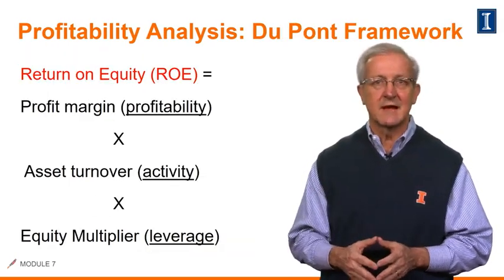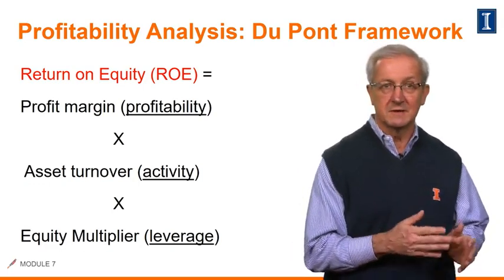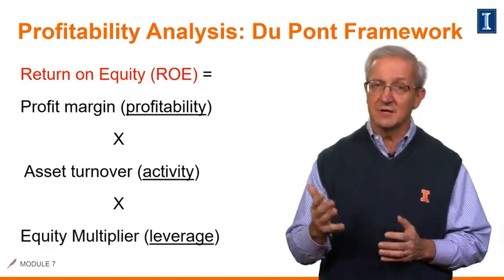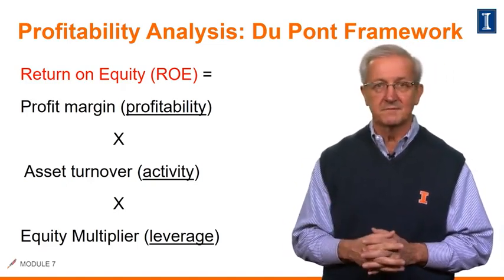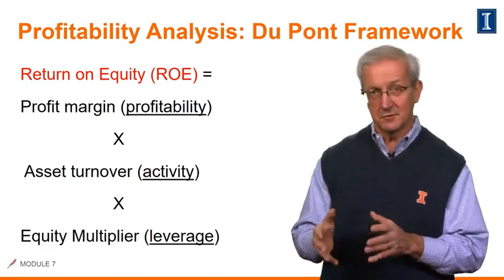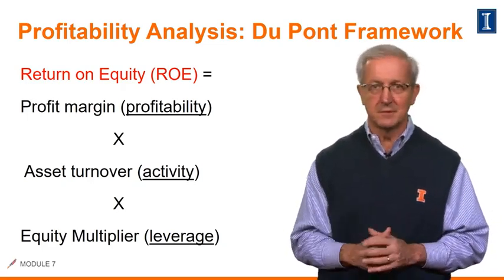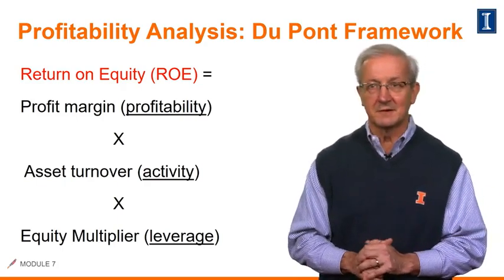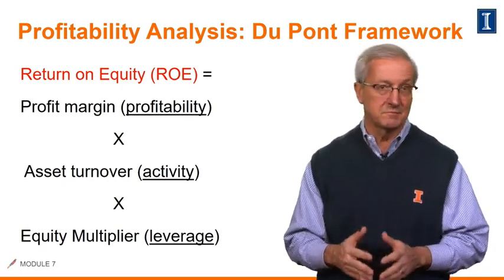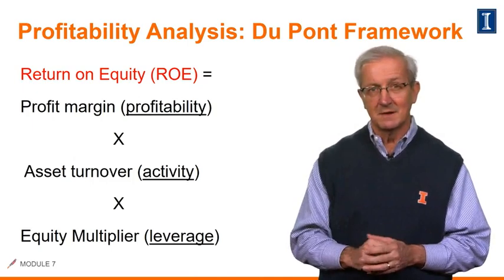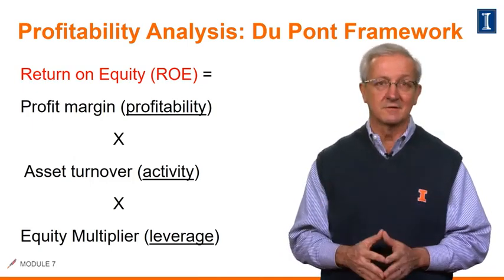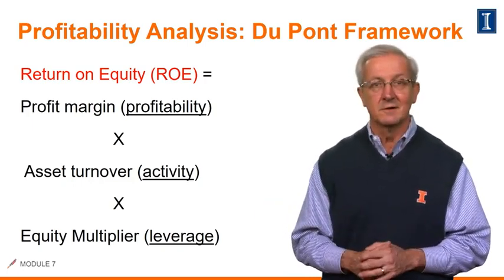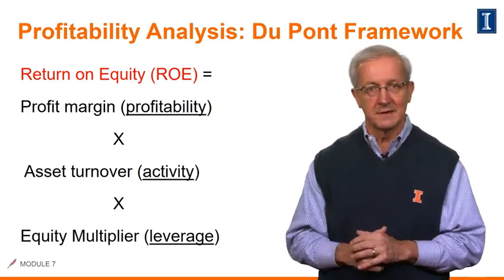Now, in this slide we discuss how shareholders may want to understand how the company's return can be improved — hopefully leading to higher dividends and higher share prices. The DuPont framework provides a convenient basis for this analysis, breaking return on equity, or ROE, into three key components. The first is the profit margin, multiplied by the asset turnover — which measures activity — giving us the return on assets, or ROA. Then multiplying that by the equity multiplier — which measures leverage — gives us the return on equity, or ROE.